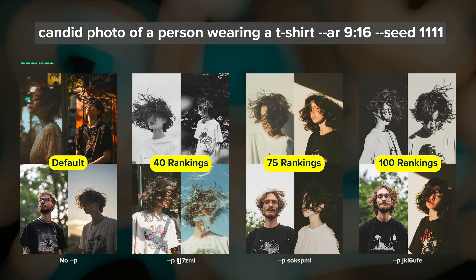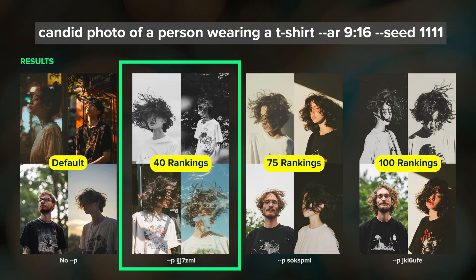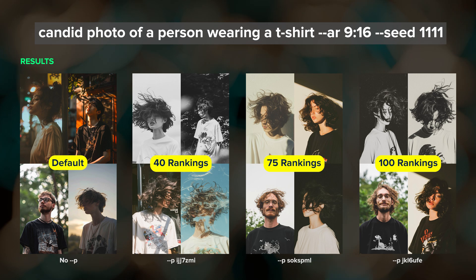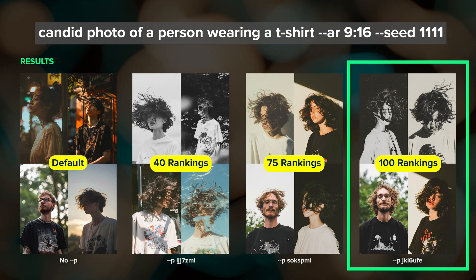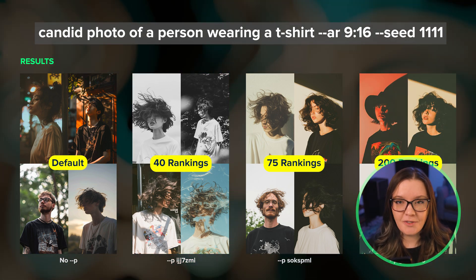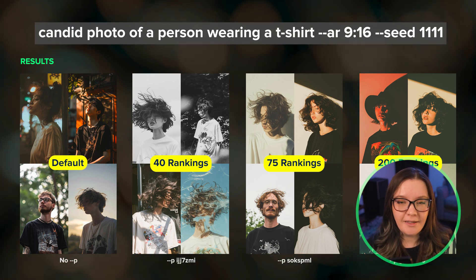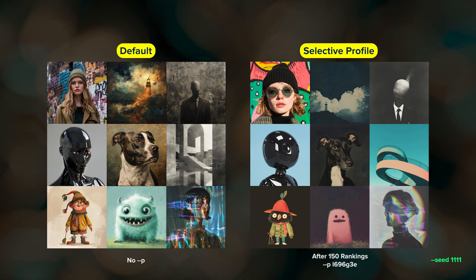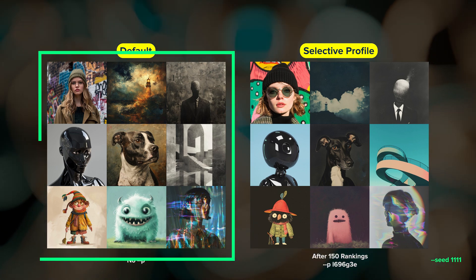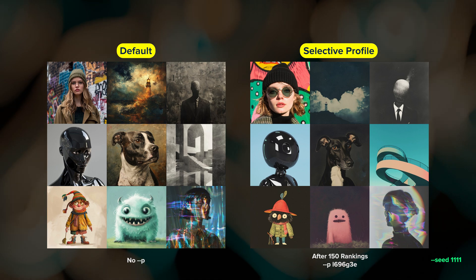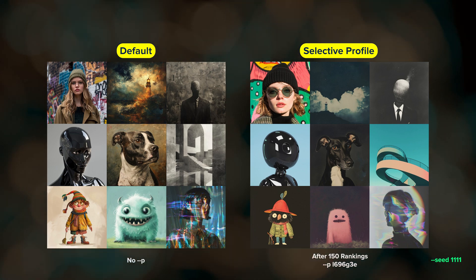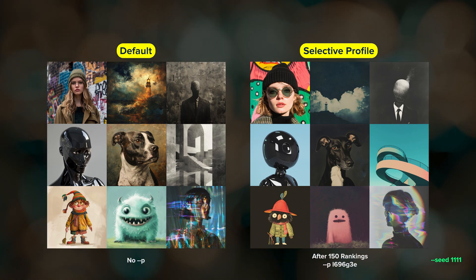Here's another prompt — this time a photographic style. We see brighter results after 40 rankings. At 75 we start seeing more muted blacks, the color palette changes, and there's more contrast between the background and the person. As we get closer to 200 rankings the blacks are lifted a bit more, there's more orange, and more emphasis on shadow. I also ran these profile codes on a diverse set of prompts. With the 150-ranking profile code the default style looks a bit grungier, while the personalization profile shows a different color palette with more muted and darker tones.